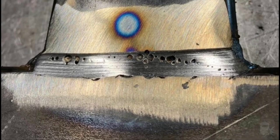Other types include distributed porosity (numerous small pores scattered throughout the weld metal) and crater pipes (pores that form at the end of a weld bead).